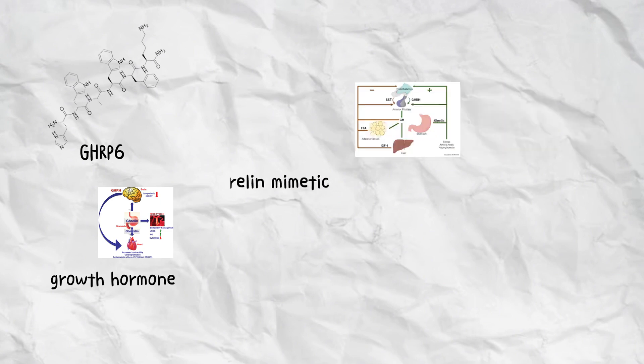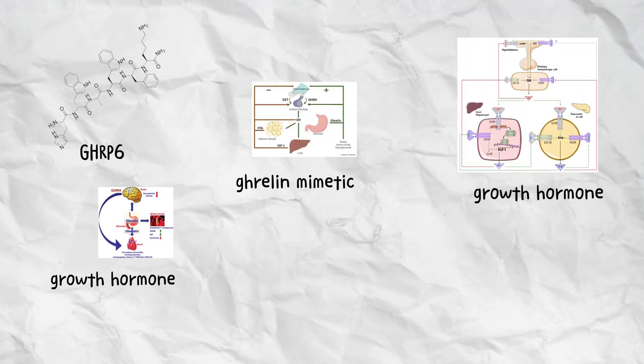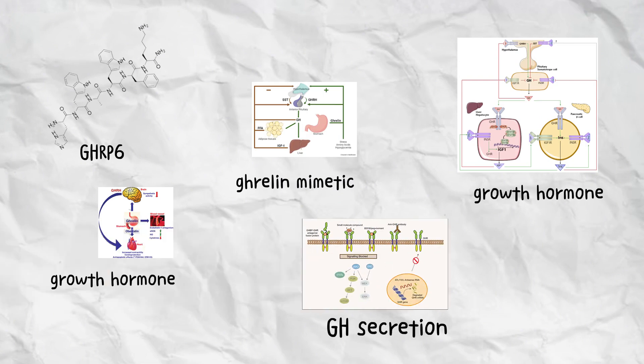GHRP-6, growth hormone-releasing peptide 6, is a potent ghrelin mimetic that triggers the pituitary gland to release growth hormone. It works by activating ghrelin receptors, leading to rapid GH secretion and an increase in insulin-like growth factor 1, IGF-1 production. This process supports muscle repair, fat metabolism, and tissue regeneration.